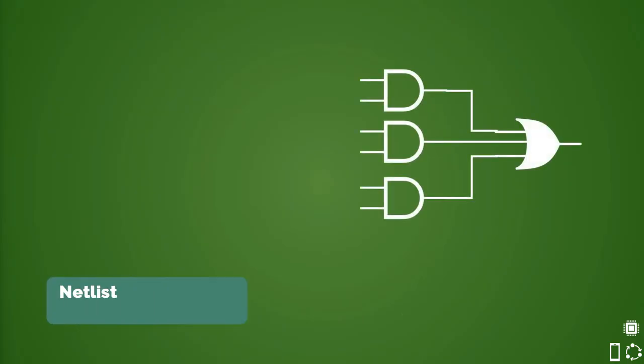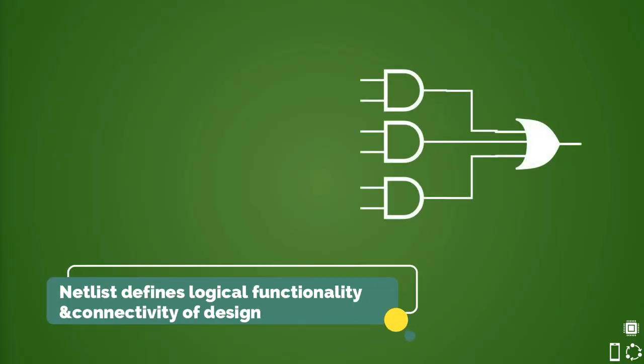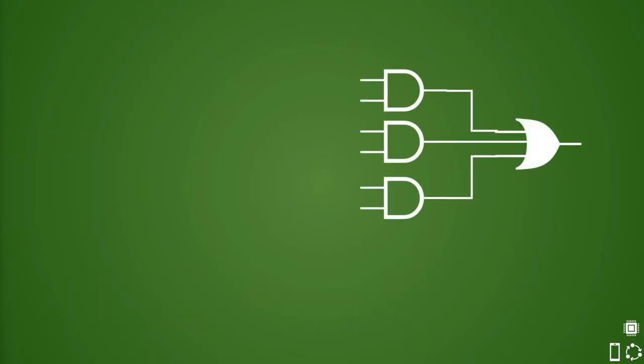A netlist consists of a list of electronic components in the circuit and list of nodes that they are connected to. A network or net is a collection of two or more interconnected components. It is nothing but a textual description of a circuit made of components.